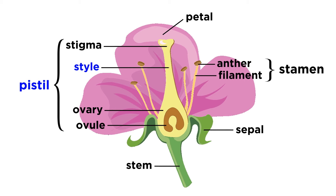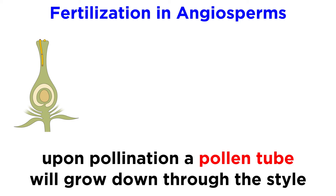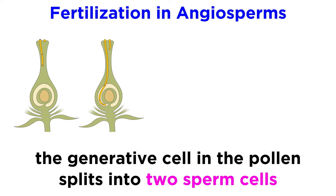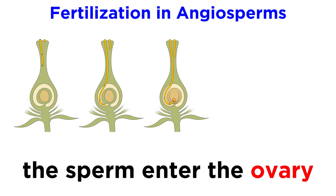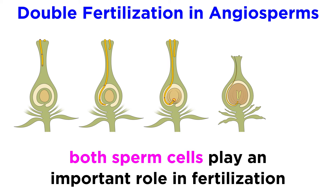The style is a long tube-like structure that supports the stigma. When the flower is pollinated, the pollen tube grows down through the style. While the pollen tube is growing, the generative cell in the pollen splits into two sperm cells. At the bottom of the style is the ovary, where the female gametophytes grow, which will become the egg cells.